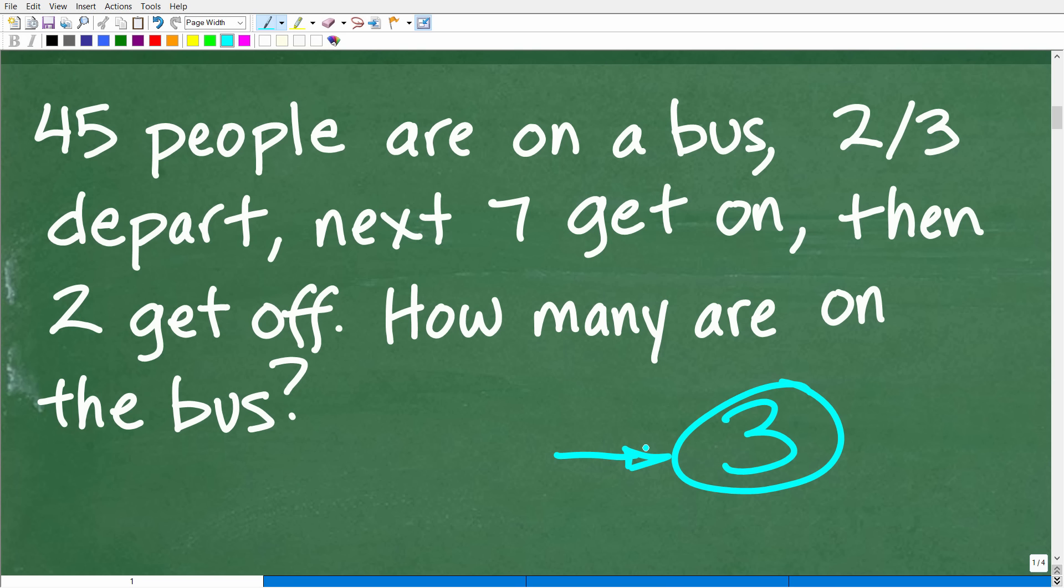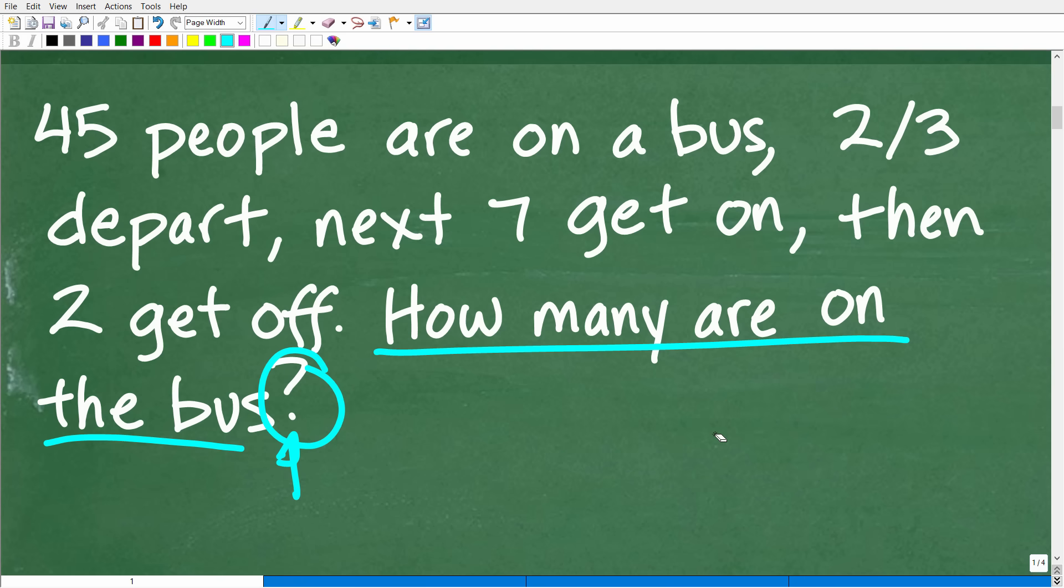You always want to read the problem once and then be like, okay, I think I understand what's going on. Read it again, kind of confirm that, and then read it one more time and make sure you understand the question. And of course, you can always identify the question in the problem by going to the question mark and backing up. So how many people are on this bus? And again, we have some people on this bus. People are getting off. People are getting back on the bus, et cetera. So we've got to read this problem and kind of visualize it, interpret it.